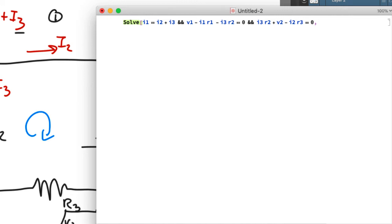Comma, we now need to tell it what we're solving for. So we're going to solve for the currents I1, I2, I3. Close the square brackets and hit shift enter.